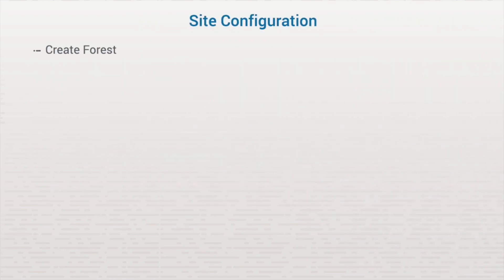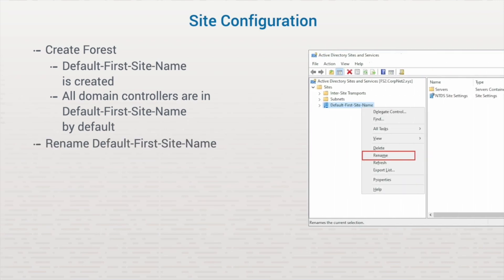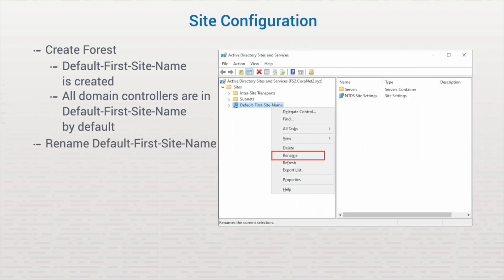For KCC to work properly, you first need to manually set up the sites and subnets. By default, Active Directory creates a site called Default-First-Site-Name when a forest is created. All domain controllers are in this default site when the forest is organized. If a network is small and in one location, this one default site may be all you need. If the network is larger and has multiple locations, like our previous example, you'll need to manually create sites.